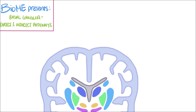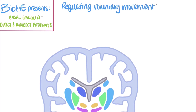Hi everyone! Let's go over the direct and indirect pathways of the basal ganglia. The basal ganglia is composed of multiple structures in the brain that are involved in regulating voluntary movement. Throughout the day, the basal ganglia processes motor commands coming from your motor cortex and modifies the commands accordingly. It promotes the voluntary movements that you intend to make and simultaneously suppresses unwanted movements.